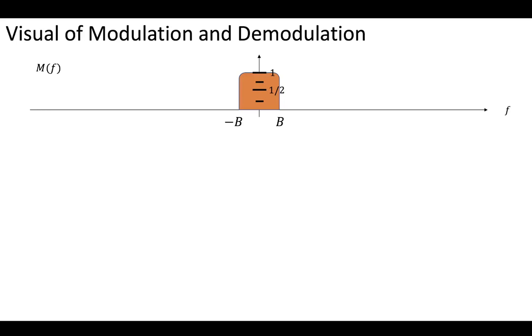Now let's look at a visualization of modulation and demodulation. Previously, we derived what would happen if we wanted to modulate our message and look at it in the frequency domain. Then we looked at the math behind demodulating the message, where we were able to get our original message separated out from the modulation components which occur at those higher frequencies.